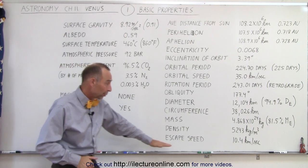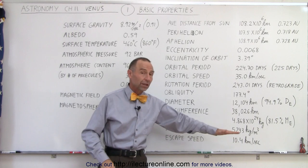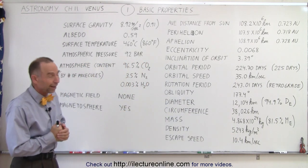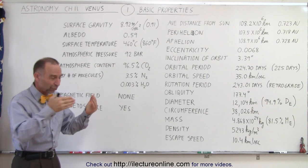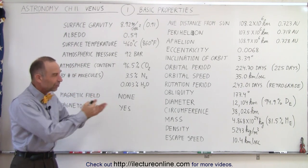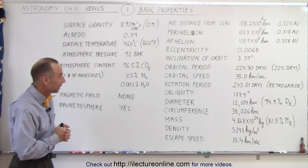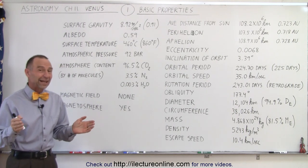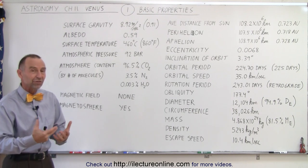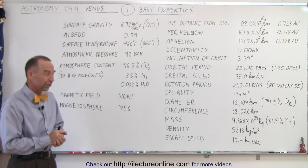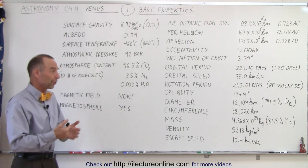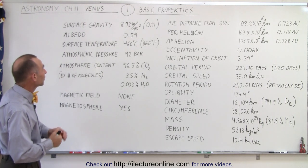The escape speed, in order to get away from the planet, is 10.4 kilometers per second, about 11 kilometers per second for the Earth. We can actually land a spacecraft on the surface, but it doesn't last very long because of the tremendously hot and corrosive conditions. Most spacecraft that land on the surface only last for a few minutes before they stop communicating with us.